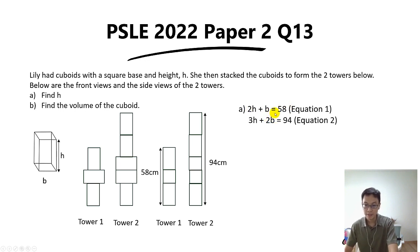So equation 1 times 2: 2h times 2 will give you 4h, b times 2 will give us 2b, and 58 times 2 will give us 116. So this will be equation 3. And now we have 2b here and we also got 2b here, so we can now use the method of elimination to cancel away the b's.